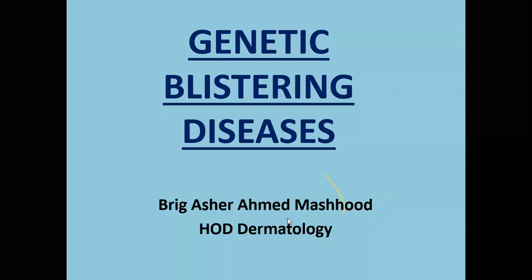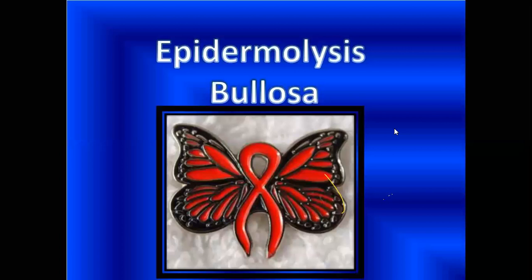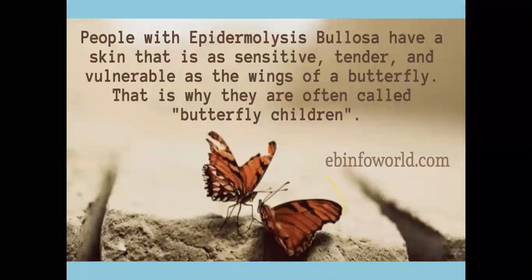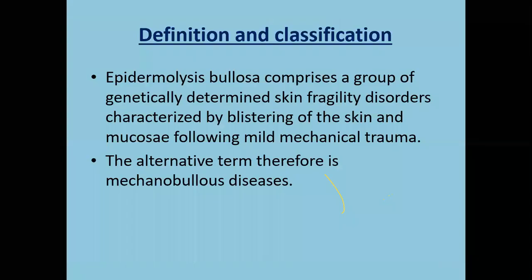Today's lecture is on genetic blistering disorders. This topic includes the main disorder which is Epidermolysis Bullosa. People with Epidermolysis Bullosa have skin that is sensitive, tender, and vulnerable — as fragile as the wings of a butterfly. That's why they are often called the butterfly children. EB comprises a group of genetically determined skin fragility disorders characterized by blistering of the skin and mucosa following mild mechanical trauma, hence the alternate term mechanobullous diseases.